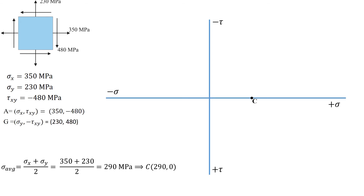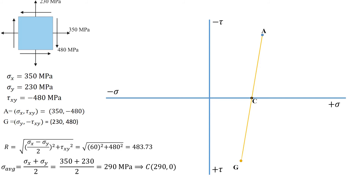Step 3, plot two reference points A and G. Point A has a coordinate of (sigma x, tau xy) and represents the normal and shear stress components on the element's right-hand vertical face. Point G has a coordinate of (sigma y, negative tau xy) and represents the stress components on the element's upper horizontal face. Step 4, connect points A, C, and G. Line AG represents the diameter of the Mohr's circle, and either AC or CG represents the radius R. The radius can be calculated using the formula: R equals the square root of ((sigma x minus sigma y) over 2) squared plus tau xy squared, which in this case equals 483.73.